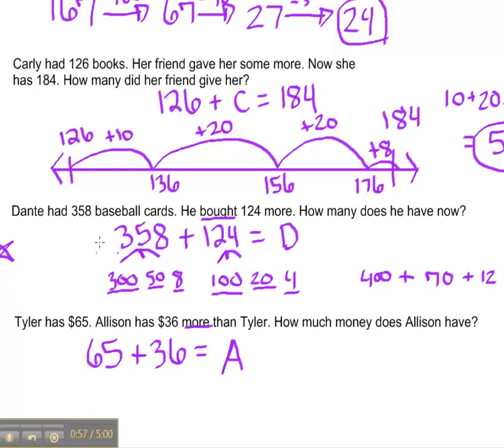Because the number sentences appear to be very similar. We're both missing information at the end. Up here, we were dealing with one person and his cards, Dante's cards. Dante has a certain amount of cards. He buys more, and now how many does he have?